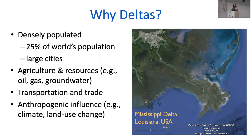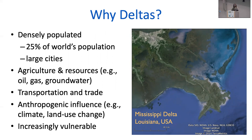Unfortunately, despite the importance of these landscapes, they're increasingly vulnerable. This is in part due to things like eustatic sea level rise as well as increasing rates of subsidence. A lot of these factors are things that we have done in terms of anthropogenic modifications of the landscape.